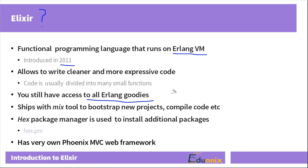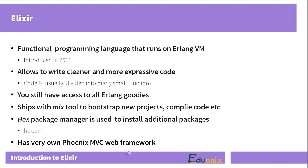Moreover, Elixir has its own tools — it ships with a special tool called Mix that allows you to easily create new projects, manage dependencies, and compile code. On top of that there is a special package manager for Elixir called Hex, quite similar to NPM for JavaScript or RubyGems for Ruby. You may visit hex.pm and find many third-party libraries. There is even a web framework called Phoenix, written in Elixir, somewhat similar to Ruby on Rails or Django, but blazingly fast — capable of handling numerous clients.